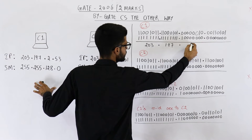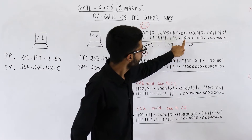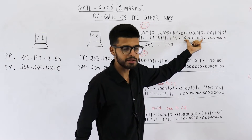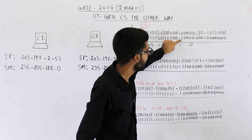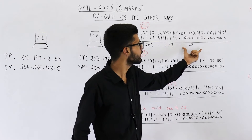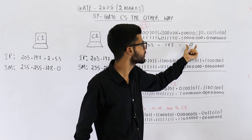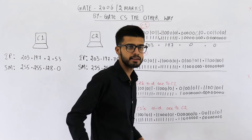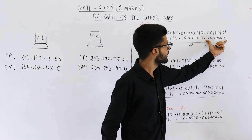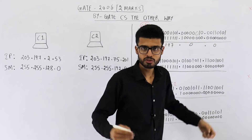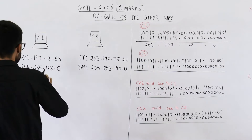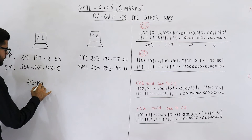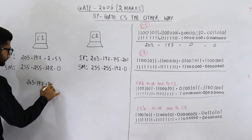How did I get a zero here? All of these bits are zero, so these seven bits will surely be zero in the AND as well — zero AND one will be zero. So all eight bits are zero, meaning in decimal it is also zero. And in the last octet you will also get zero because ANDing any number with all zeros gives zero. So the network ID for C1 is 203.197.0.0.